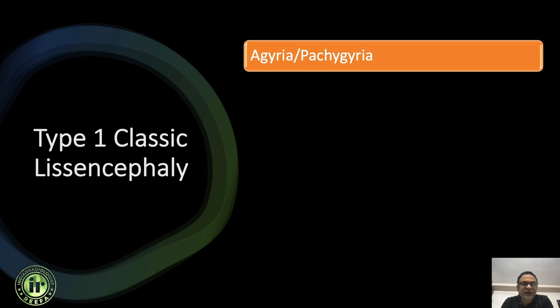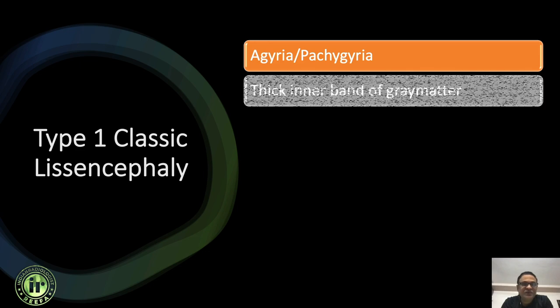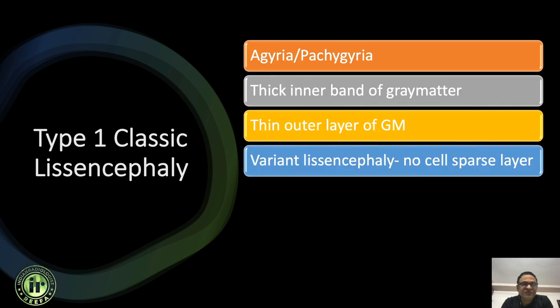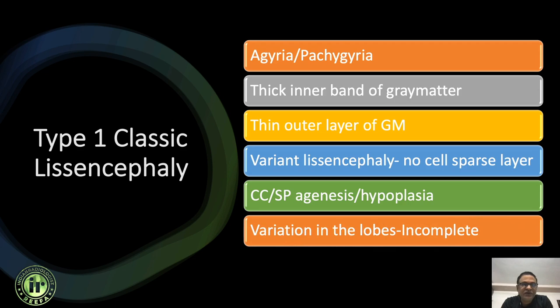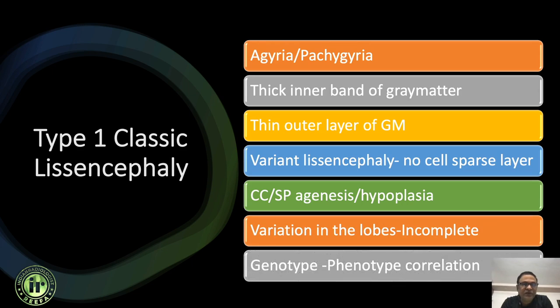A brief review: type one lissencephaly is a complex which contains agyria, pachygyria, and band heterotopia. This is a spectrum. A variant of lissencephaly exists if you don't have a cell-sparse layer. Corpus callosal abnormalities very commonly accompany this condition, and variations between anterior and posterior lobes create a gradient — that is called incomplete lissencephaly — when only part of the brain parenchyma is involved. There is excellent genotypic and phenotypic correlation.